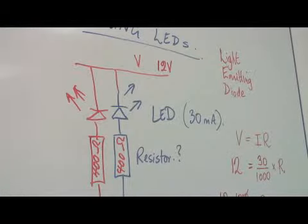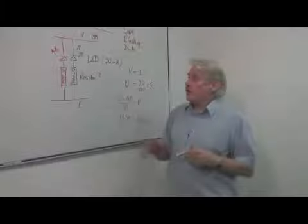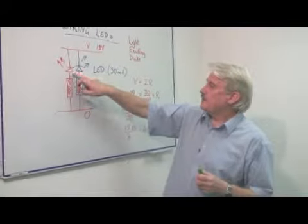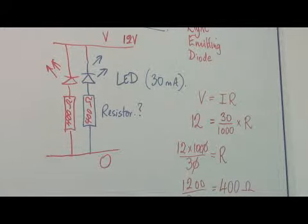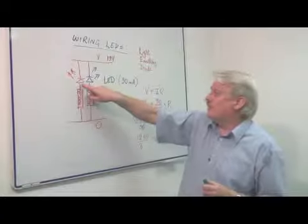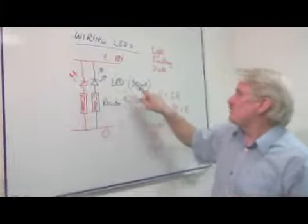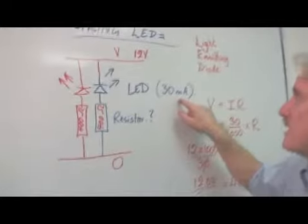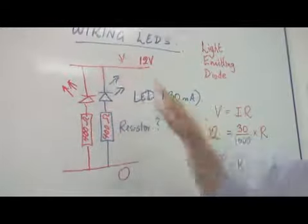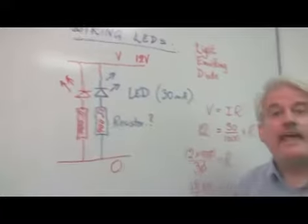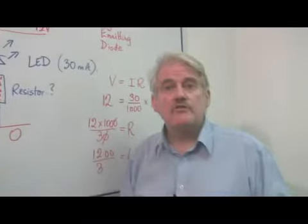The resistor here is what is controlling the current. So when I'm connecting in my light emitting diodes, I must have a resistor for each light emitting diode to limit the current to 30 milliamps. And that is how I wire up my LED in an electrical circuit.